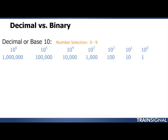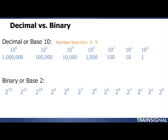In the base 10 numbering system, each column can hold 10 possible numbers: 0, 1, 2, 3, 4, 5, 6, 7, 8, 9. If we want to work with binary, we have to understand that binary is base 2. The same rules apply — the column values are going to be 2 to the 0, then 2 to the 1st, 2 to the 2nd, 2 to the 3rd, 2 to the 4th, 2 to the 5th, and so on. Each column can only have two possible number combinations: 0 or 1. These rules work exactly the same whether you're in binary, decimal, hexadecimal, or octal — any numbering system.